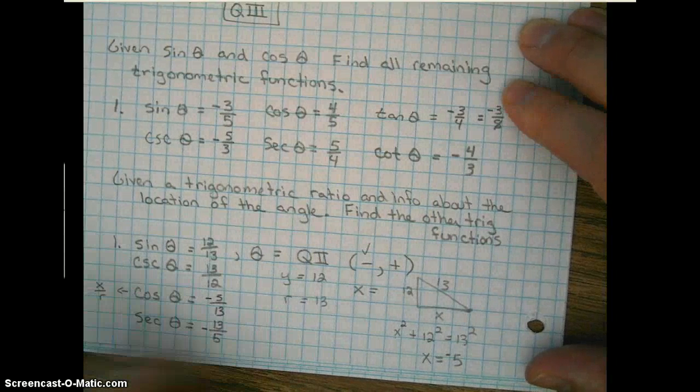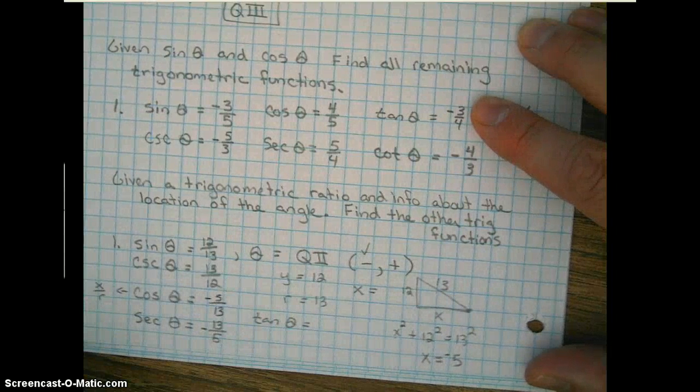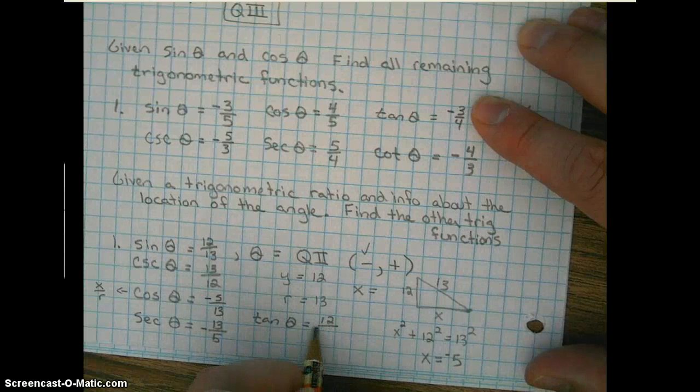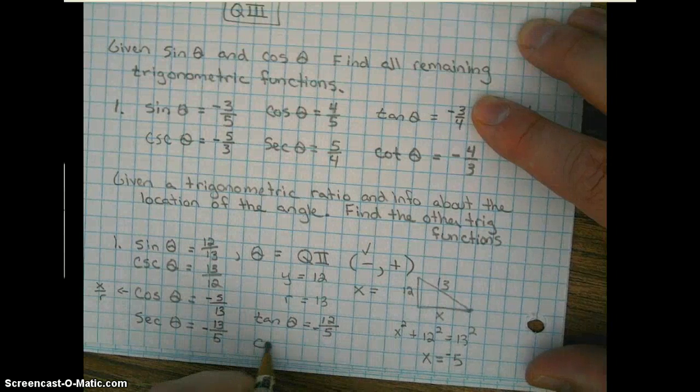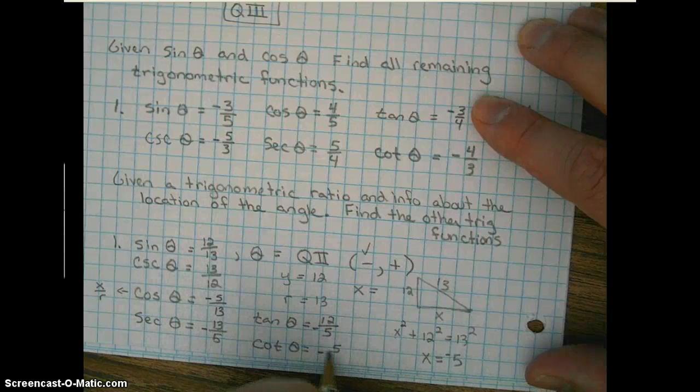Now we can do our tangent, y over x, y is 12, x is negative 5. Cotangent, reciprocal, negative 5 twelfths.